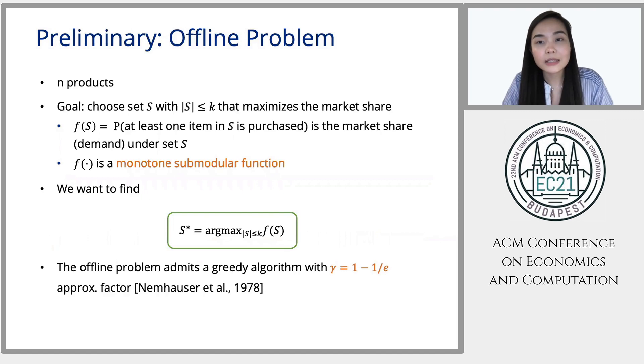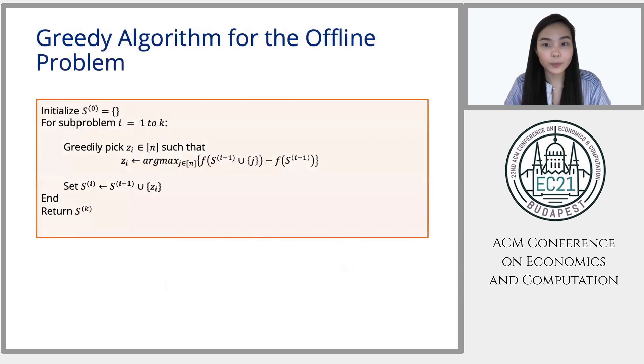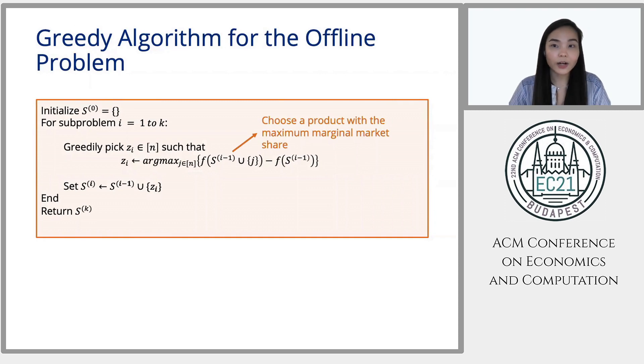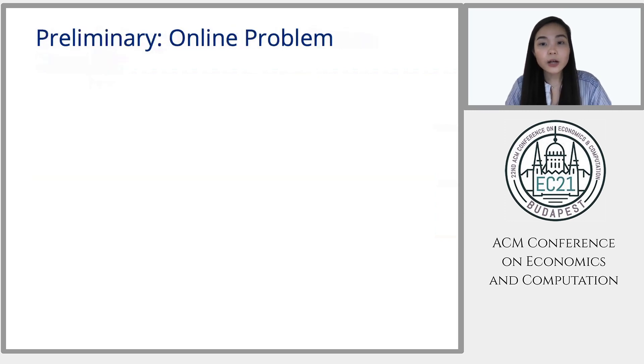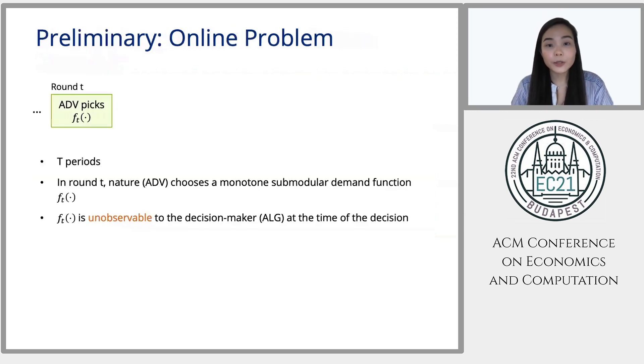So actually there is a classic algorithm by Nemhauser et al. It's a classic greedy algorithm that gives an approximation factor of 1 minus 1 over epsilon and it's tight. The greedy algorithm is this. So it starts with an empty set and then it divides the problem into K subproblems where in each subproblem the algorithm adds a new product to the previous set. So to decide which product should be added next to the previous set, the algorithm greedily picks the product that maximizes the marginal market share given the set S so far. So we can think of the algorithm as building the solution stage by stage or subproblem by subproblem where at each stage it picks one product that maximizes the marginal market share.